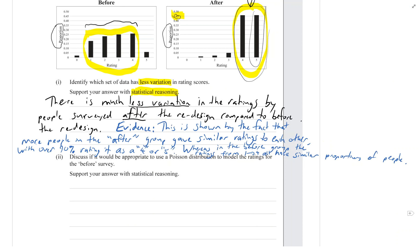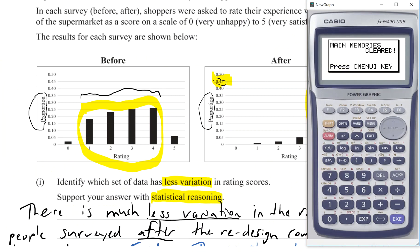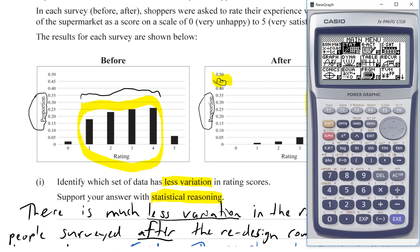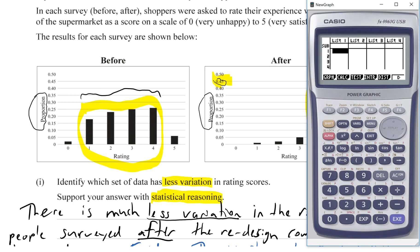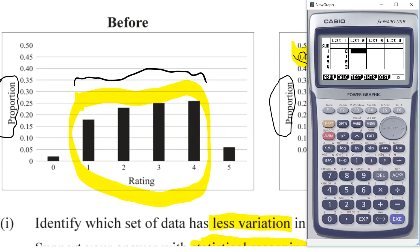If we wanted to work out the standard deviation, which I don't actually recommend for this question, but if you wanted to, basically how you do it is you go Menu, Stat, and then into list one you put all the ratings: zero, one, two, three to five. And then in list two put the proportions, which you can't really see exactly, but you just would do your best and they'd be a bit tolerant with that. So the proportion for zero looks like it's about 0.02, and the proportion for one looks like it's about 0.18, and for two looks like about 0.23.